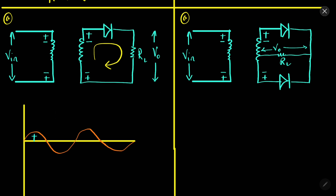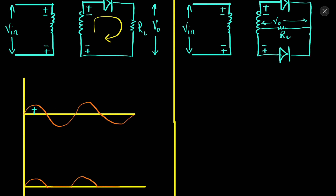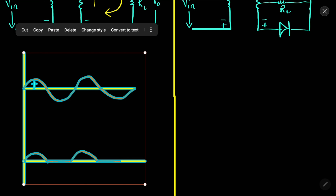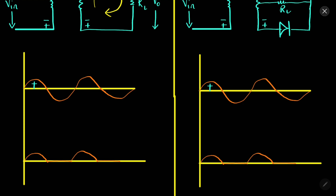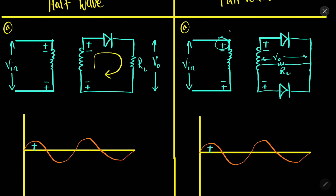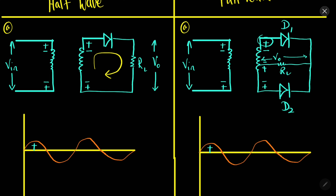When we apply the positive cycle, let us call the diodes D1 and D2. In the positive cycle, this part is positive and this part is negative. The upper diode D1 is forward biased because positive is connected with the p-type, and the lower diode D2 is reverse biased because negative is connected with positive. So the upper diode is forward and the lower diode is reverse biased.